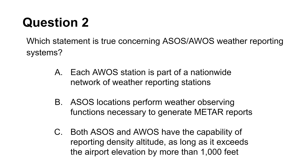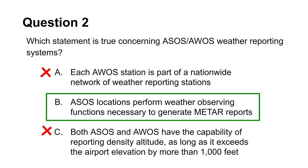The second question asks you to identify the correct statement about ASOS and AWOS weather reporting systems. Choice A is incorrect because AWOS stations can be maintained by private parties such as airports and may not necessarily be part of a nationwide network of weather reporting stations. Choice C is incorrect because both AWOS and ASOS are capable of reporting density altitude regardless of height above ground level. So choice B is the answer because ASOS stations do indeed perform weather observations and are necessary to generate METAR reports in the United States.